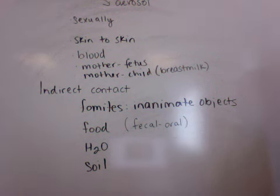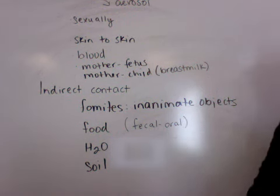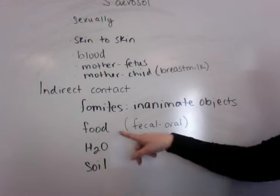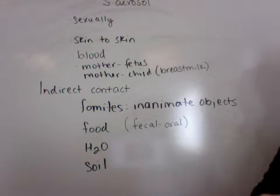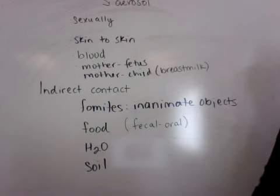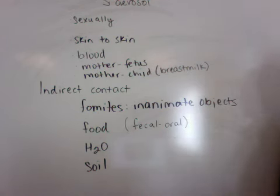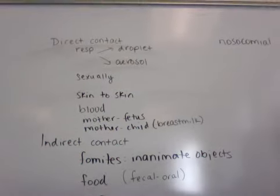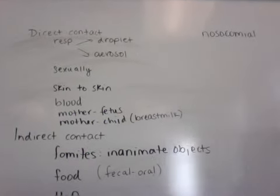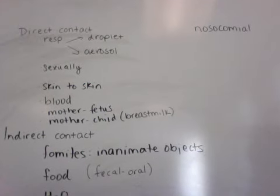For indirect contact, you have fomites, which are inanimate objects — a toilet seat, a doorknob, a shopping cart handle. Food is another route; it could be fecal-oral, such as improperly washing hands after a bowel movement, or it could be improperly cooked food. Water and soil are also indirect routes — soil is one that a lot of people forget about.